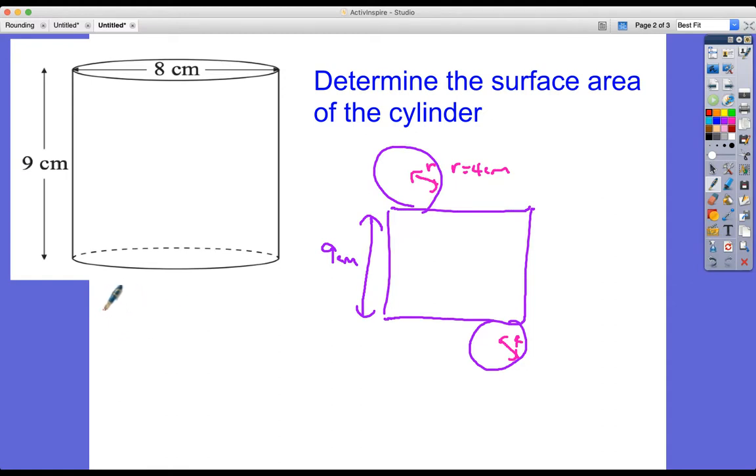So first of all, the total surface area, we've got two circles, so surface area is two circles and a rectangle, which is 2 × πr² + length × width. So it's going to be 2 × π × 4² plus the width is 9.